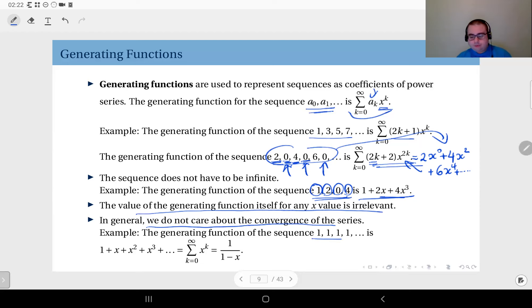For instance, the generating function of the sequence consisting of all ones—1, 1, 1, 1, etc.—is simply 1 plus x plus x² plus x³ plus x⁴, and so on, up to infinity. Simply the power series which is the sum of x to the power k for k equals 0 up to infinity. Now we know that this is equal to 1 over (1 minus x) for the absolute value of x strictly less than 1.